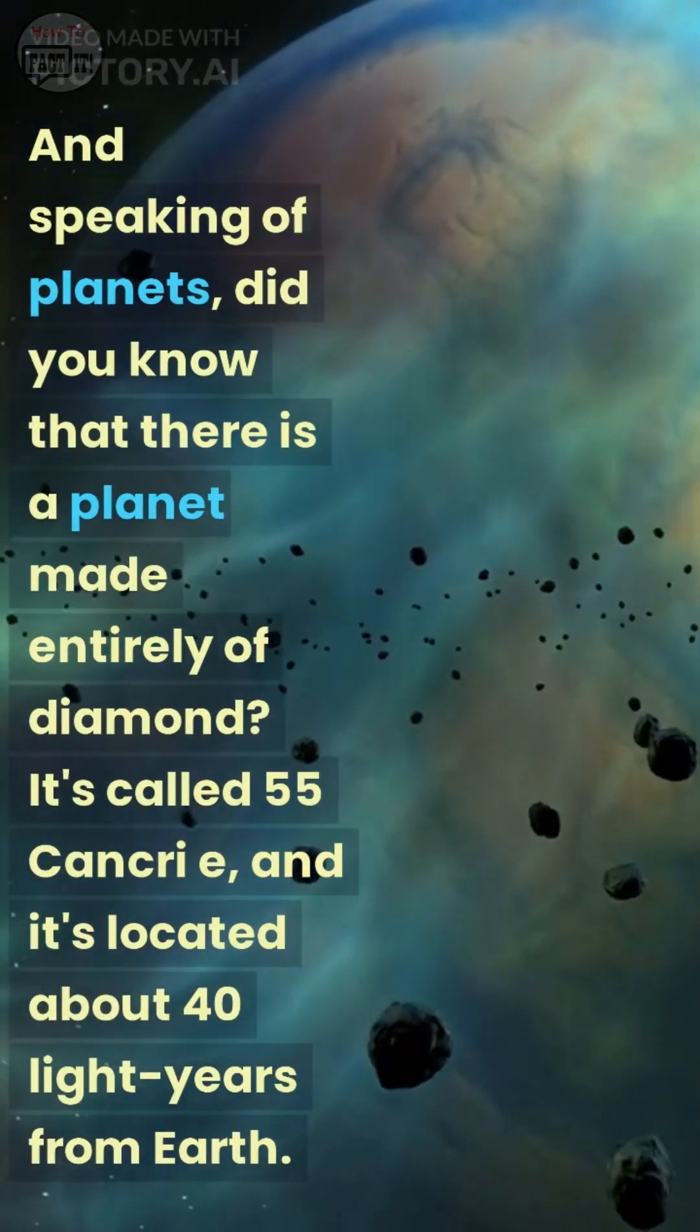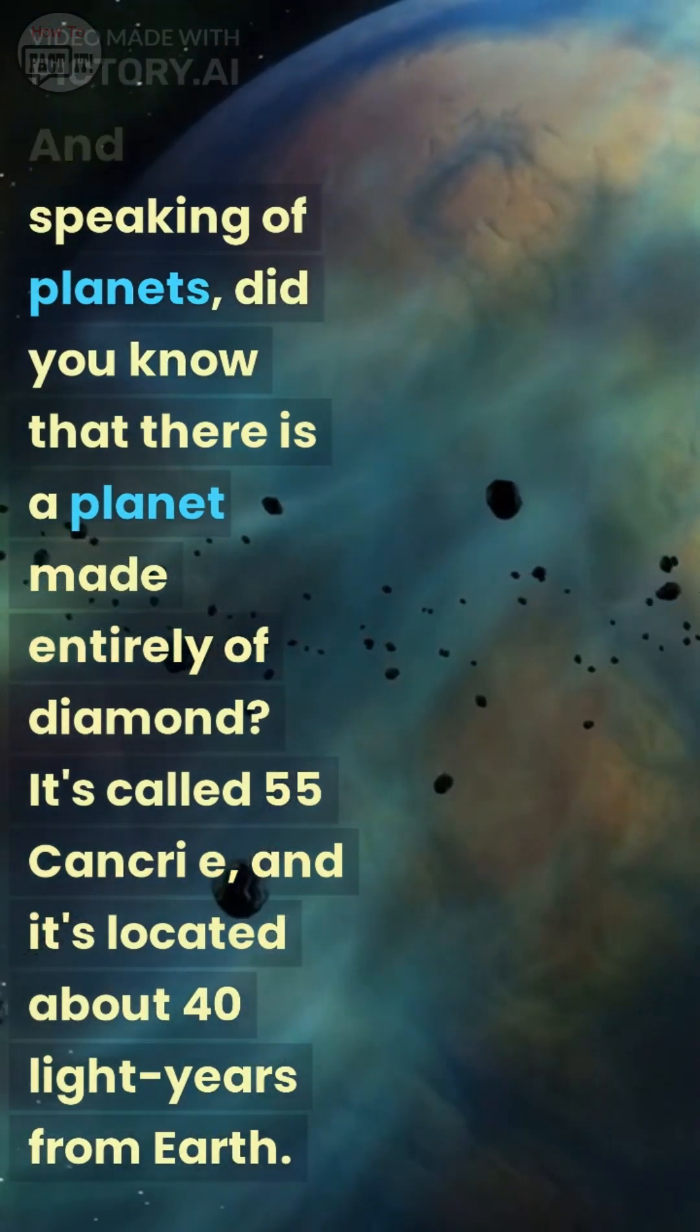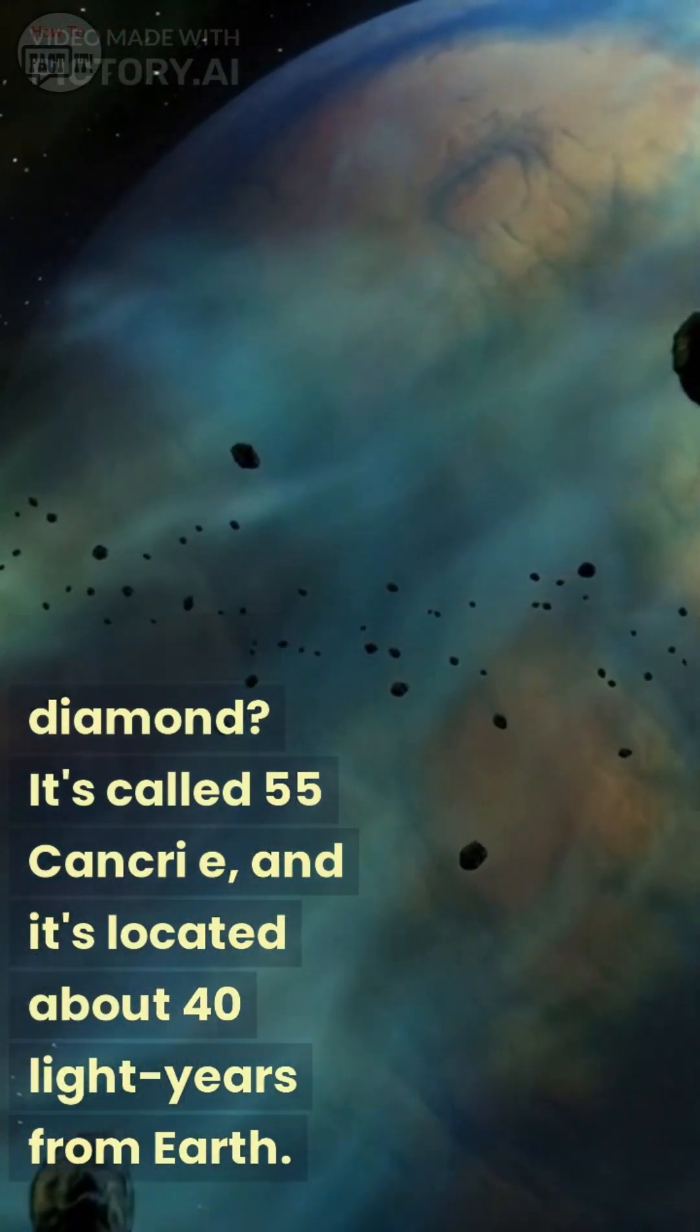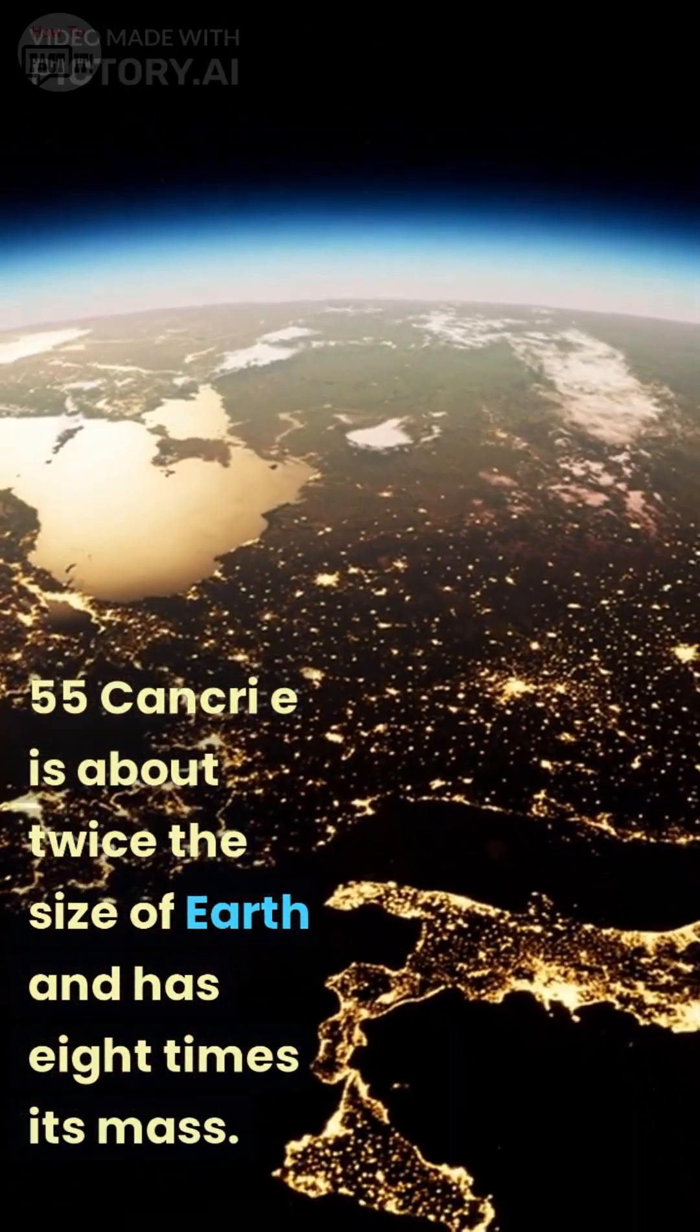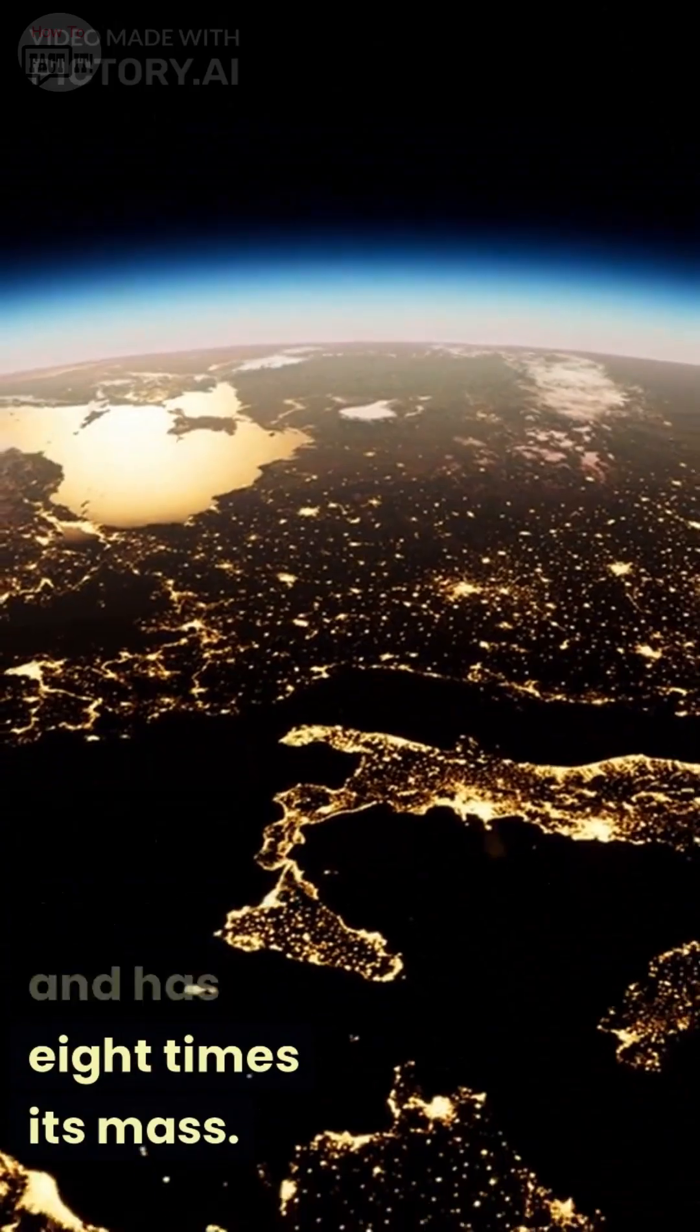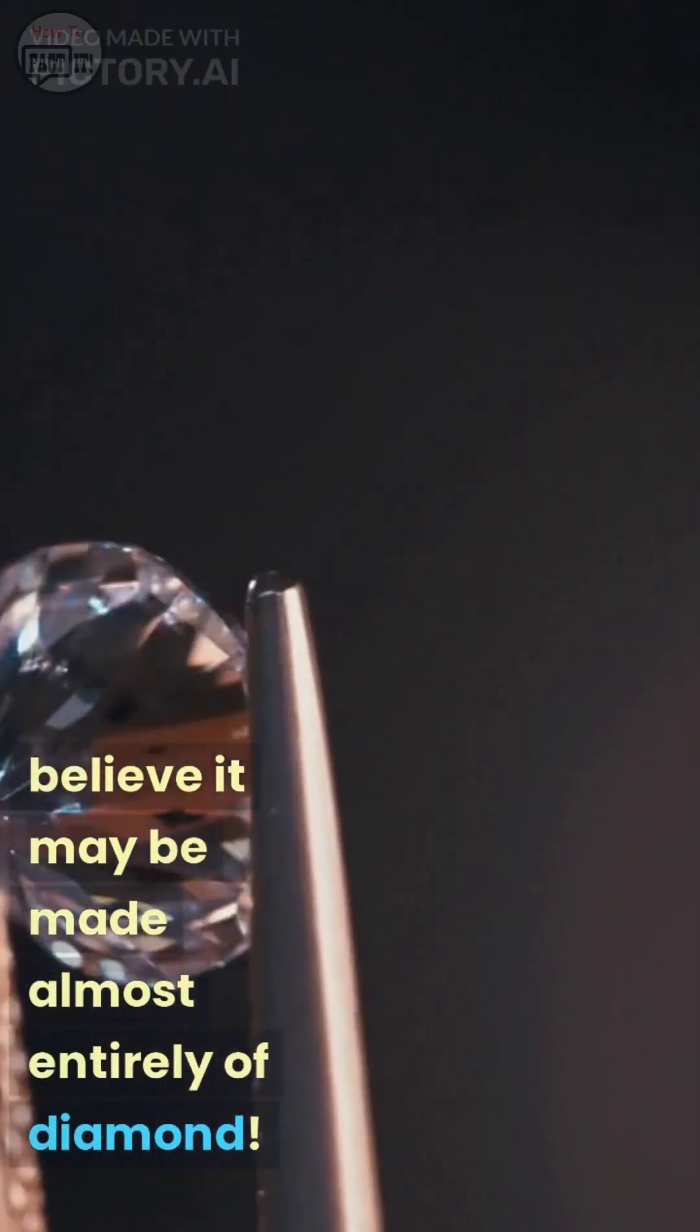And speaking of planets, did you know that there is a planet made entirely of diamond? It's called 55 Cancri e, and it's located about 40 light-years from Earth. 55 Cancri e is about twice the size of Earth and has 8 times its mass. It's so dense that scientists believe it may be made almost entirely of diamond.